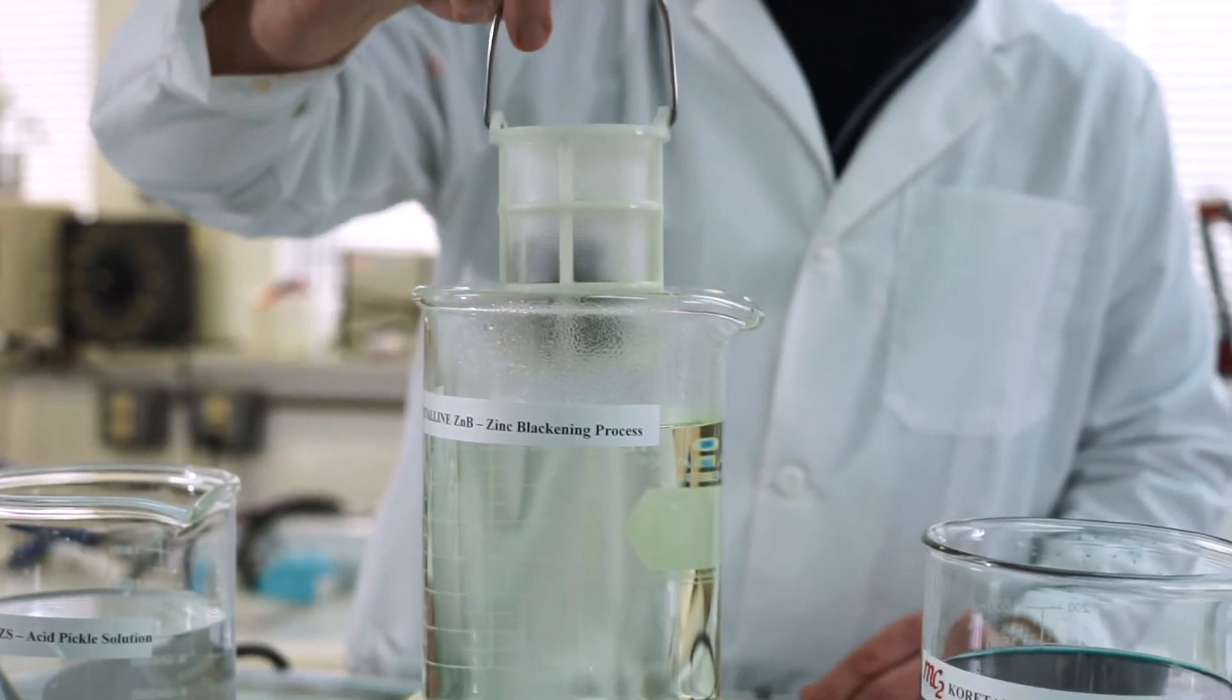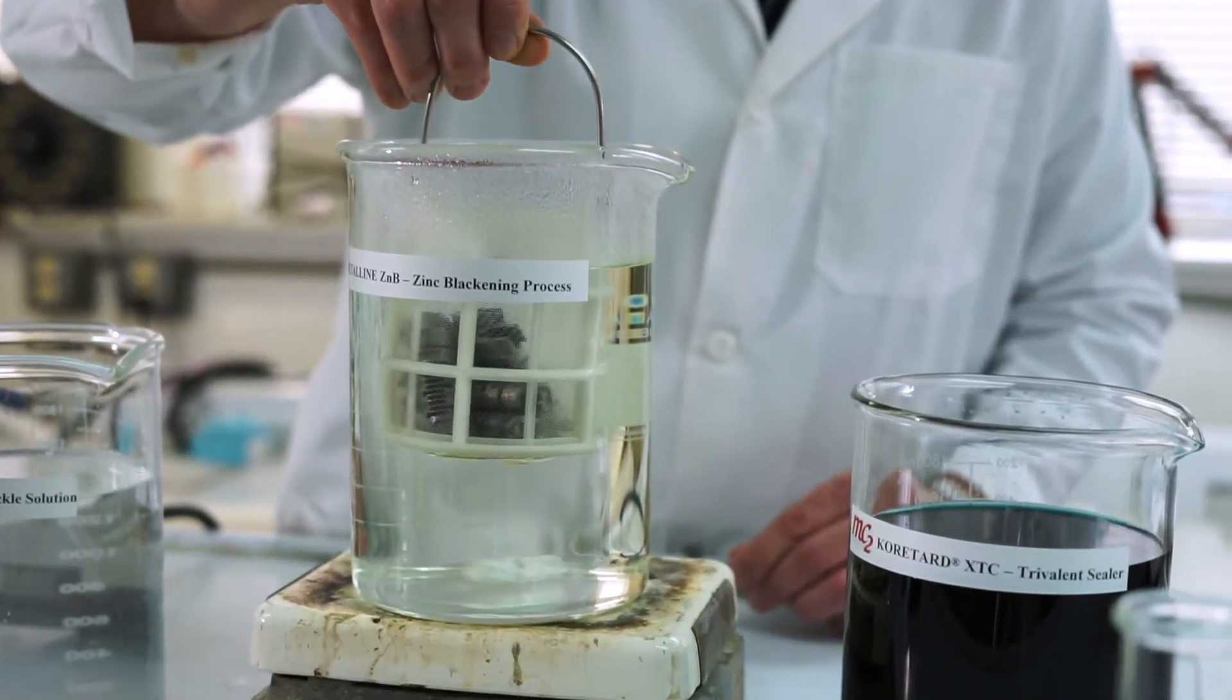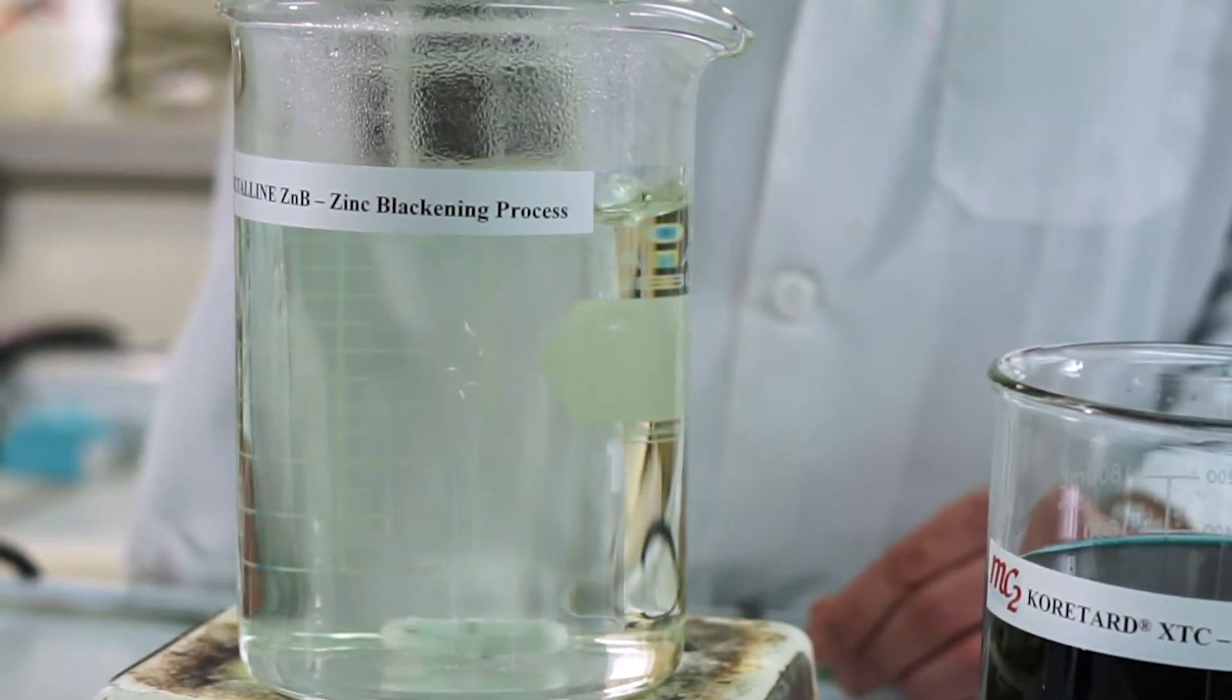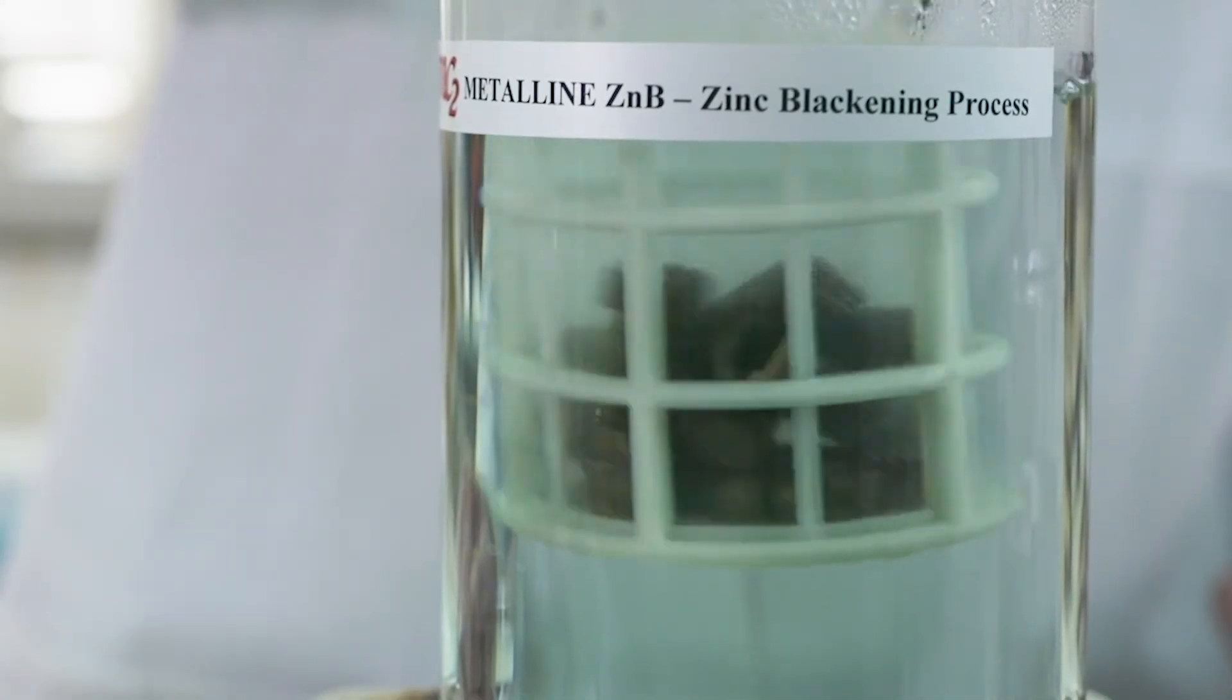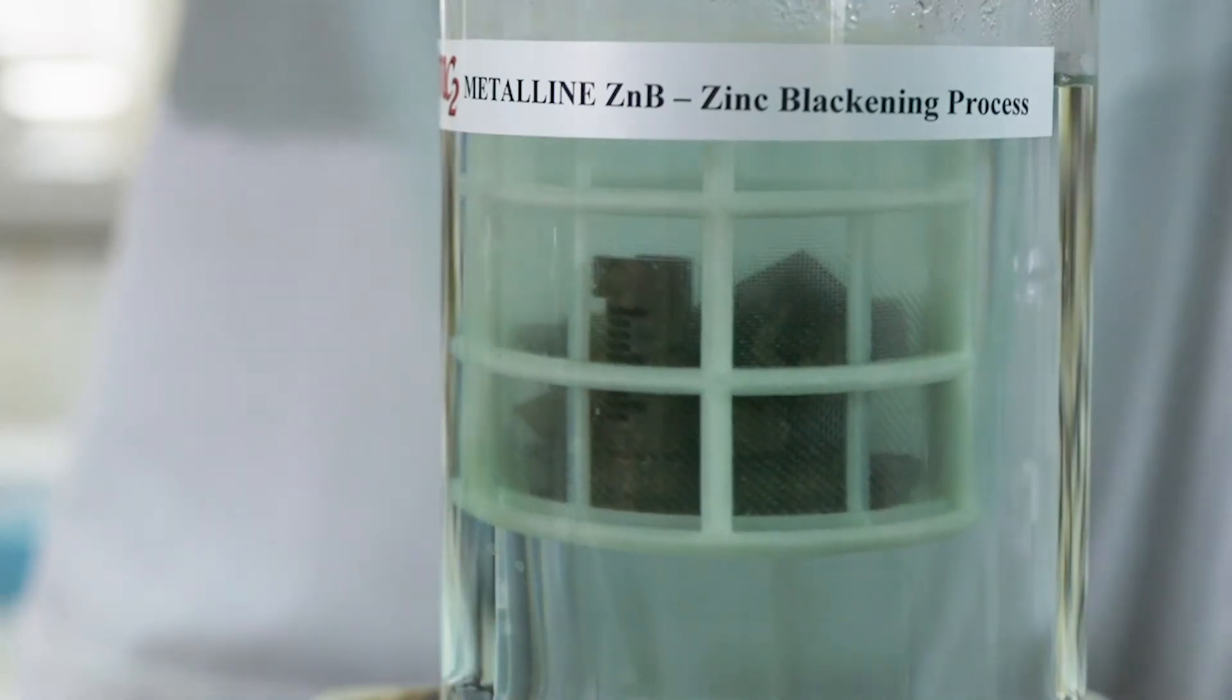The parts are then rinsed thoroughly and immersed into the MetaLine ZMB blackening solution for 60 to 180 seconds. The immersion time varies depending on the size and quantity of the parts being processed.